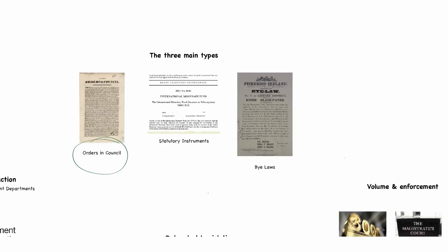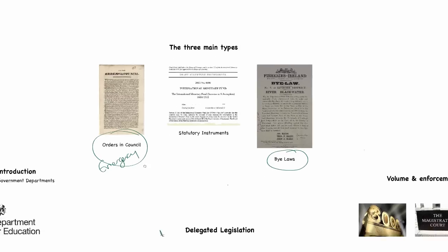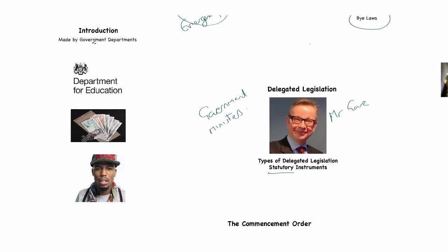There are three main types: orders in council, which are really used for emergency situations and certain change of power situations; bylaws; and in this video we're going to look at the statutory instrument. The easiest thing to say about statutory instruments is that they are made by government departments. Mr Gove is the Education Minister, and as the Education Minister he works for the Department of Education. So a statutory instrument to do with education would be delegated to Mr Gove, the Education Minister, who would draft it through the Department for Education.